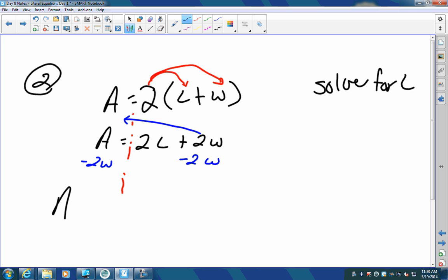I get A minus two W equals, the two W cancels right there, two L. To get L by itself, you have to divide everything by two. So one of the ways you can write this is L equals A minus two W all divided by two.